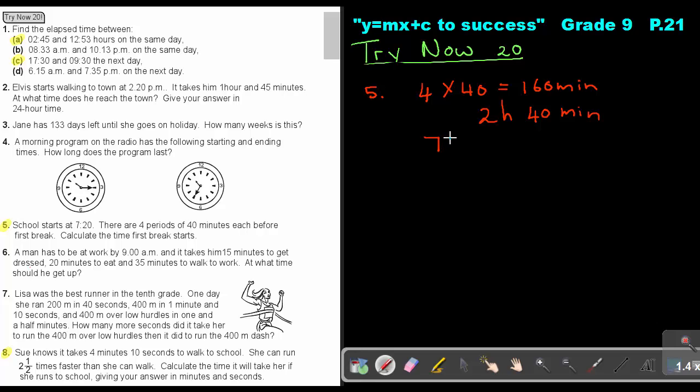Then I take the time that school starts. School starts 7:20, and I just add the two hours and 40 minutes. That's giving me a 60. That's giving me a nine. As soon as I get 60, I must bring the hour over, bring it to the hours. So that will be an answer of 10. So I can say that break will be at 10 a.m. or on the 24-hour clock.